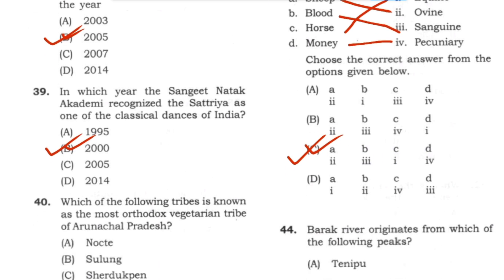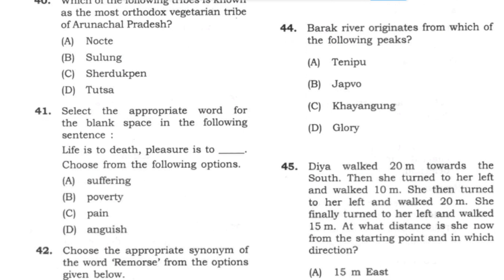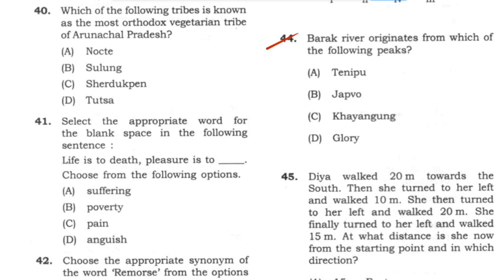Question 44: Barak river originated from which of the following peaks? Answer: option B (Japvo).